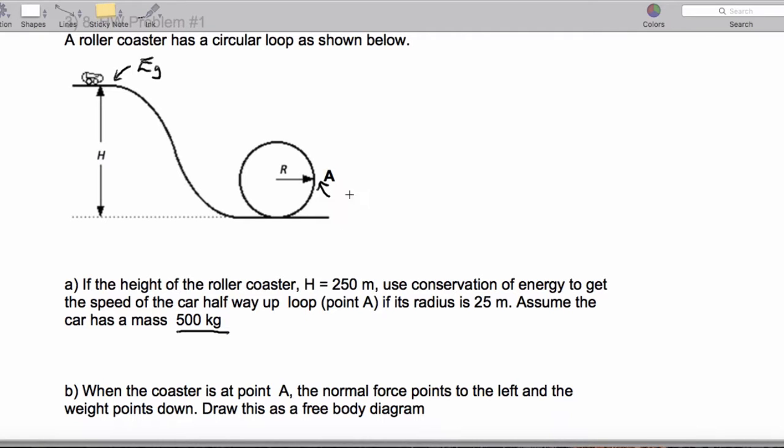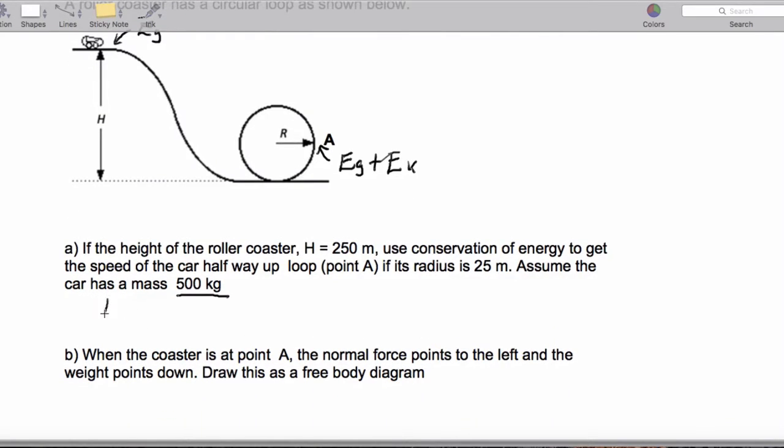And then when we get to point A, we have a combination of gravitational energy and kinetic energy. So when we put it all together, we're going to end up getting EG at the top equals EG plus EK.